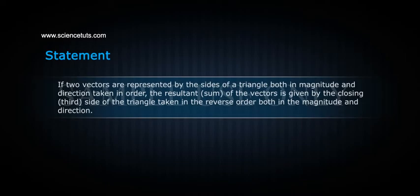If two vectors are represented by the sides of a triangle, both in magnitude and direction taken in order, the resultant sum of the vectors is given by the closing third side of the triangle taken in the reverse order, both in magnitude and direction.